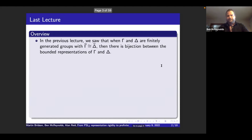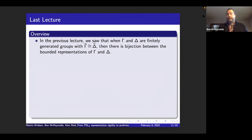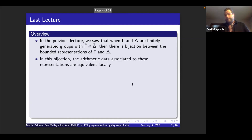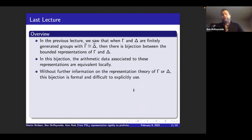I wanted to do a quick overview of the previous lecture. We saw that if we have two finitely generated groups Γ and Δ that have isomorphic profinite completions, then there's a bijection between the bounded representations of these groups. In the simplest terms to remember, these bounded representations are ones that extend to the profinite completion. In this bijection, the arithmetic data that Ryan spoke about in the second lecture — the data we can attach to these representations — is equivalent locally, but without any additional assumptions on Γ or Δ, this is just formal and really impossible to explicitly use.